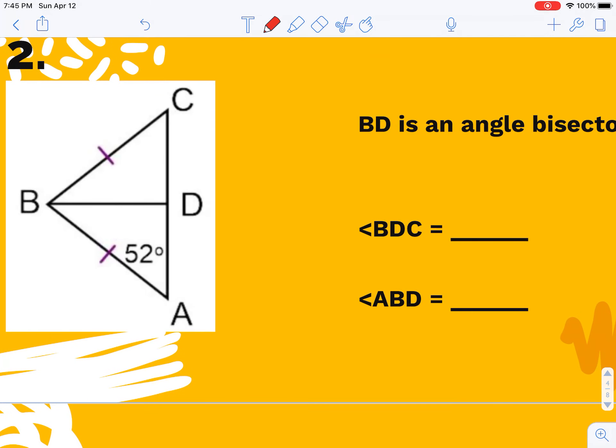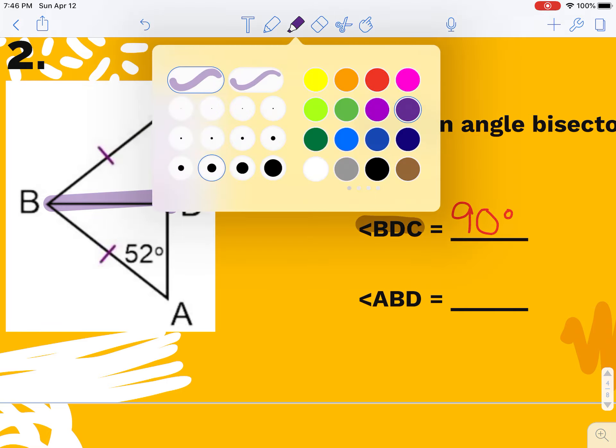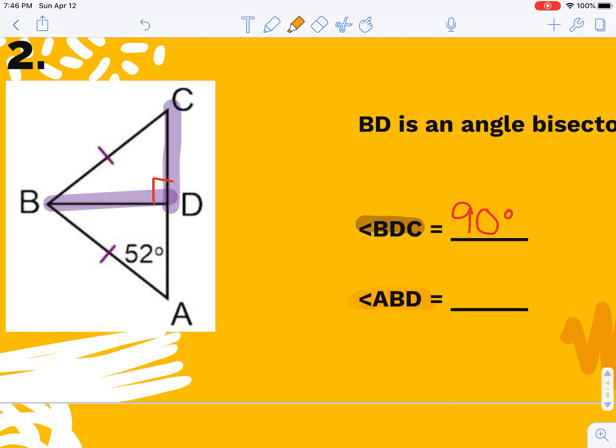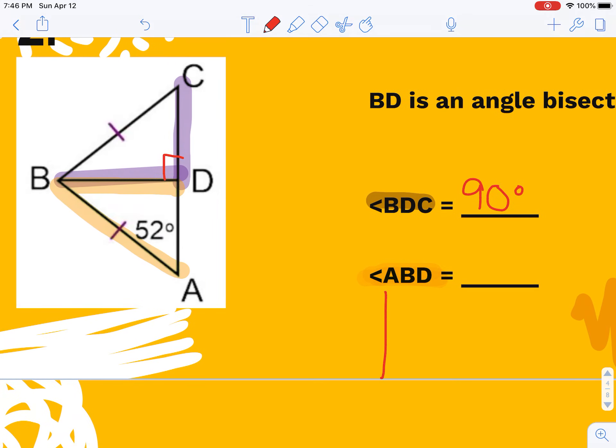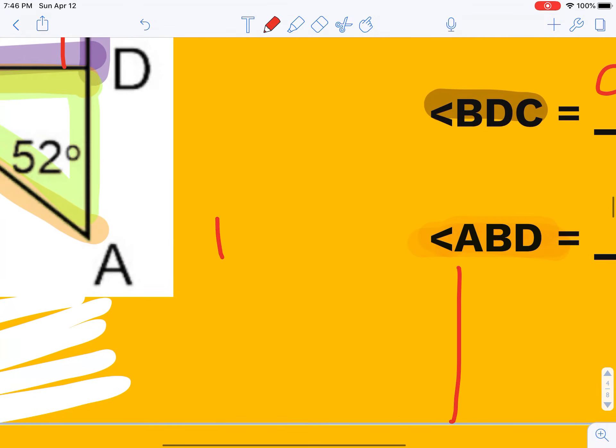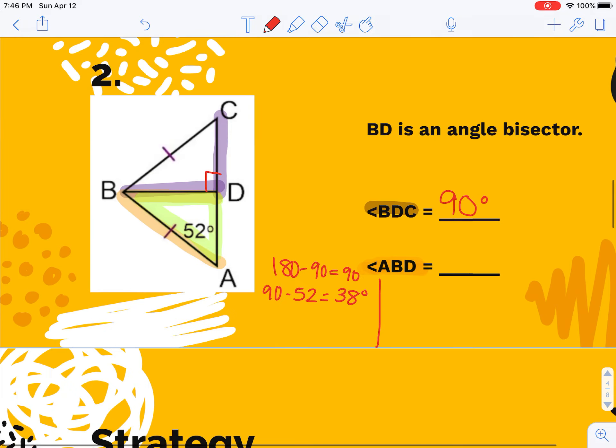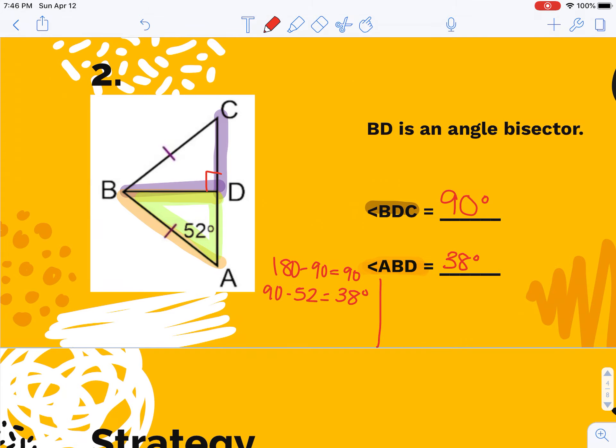When I work with my angles, if I'm finding angle BDC, I'm going to start at B, go to D, turn, go to C. Because BD is an angle bisector, it's also my altitude, so that will have to be 90 degrees. Angle ABD then, I'm going to start at A, go to B, turn, go to D, and I have a choice now. I can do this one of two ways. I can use this green triangle and say I have a 90 degree angle and I have a 52 degree angle, so there's 38 degrees left for angle ABD.